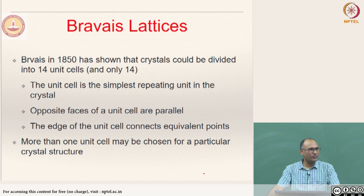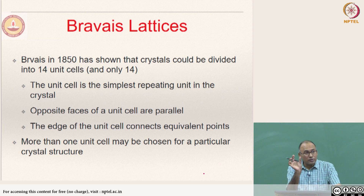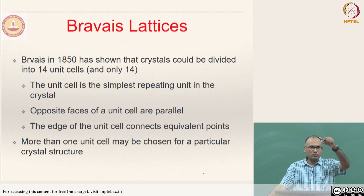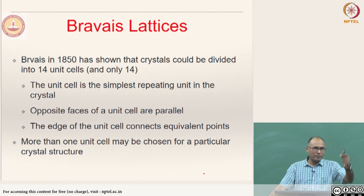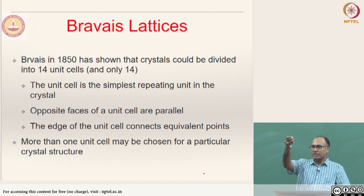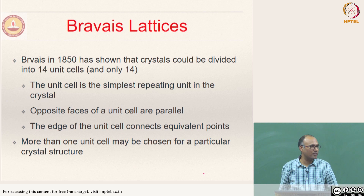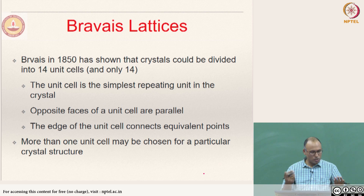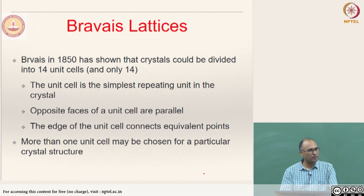What are the requirements of the unit cell? Opposite faces should be parallel — that is why a parallelogram is a qualified unit cell. The edges of the unit cell should connect equivalent points. If you are sitting on a lattice point, it does not matter which lattice point you are on because all of them have the same kind of neighbors — that is what is meant by equivalent point. So the edge of the unit cell connects equivalent points, and opposite faces in 3D (edges in 2D) should be parallel. Also, more than one unit cell may be chosen for a particular crystal structure.